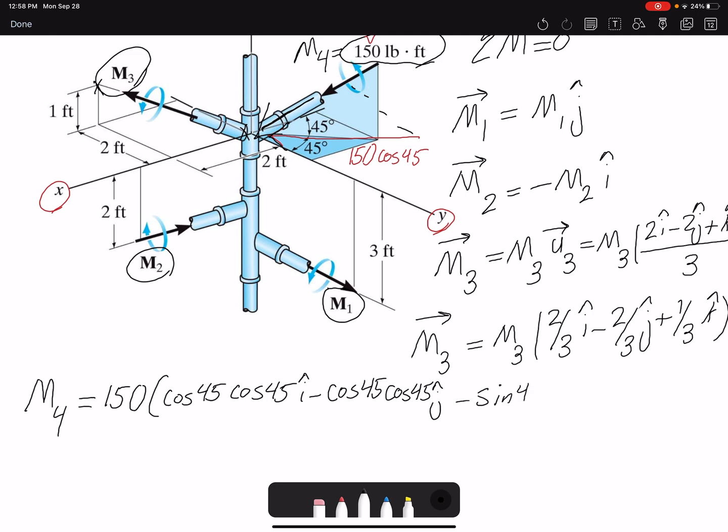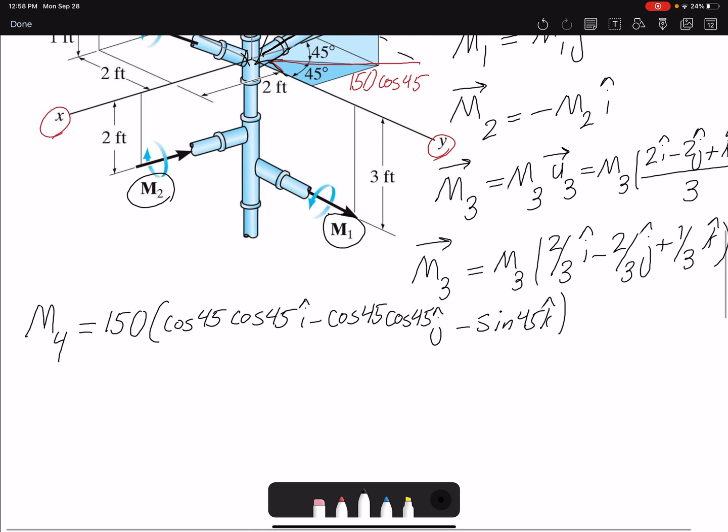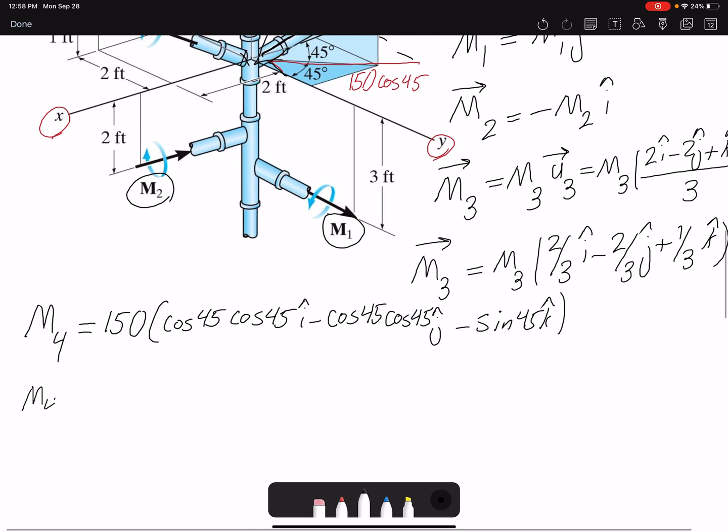So for my moment M4, I have everything, both the magnitude and direction. After simplification, I get 75i minus 75j minus 106.06k, and the unit that I'm using here is pound-feet.